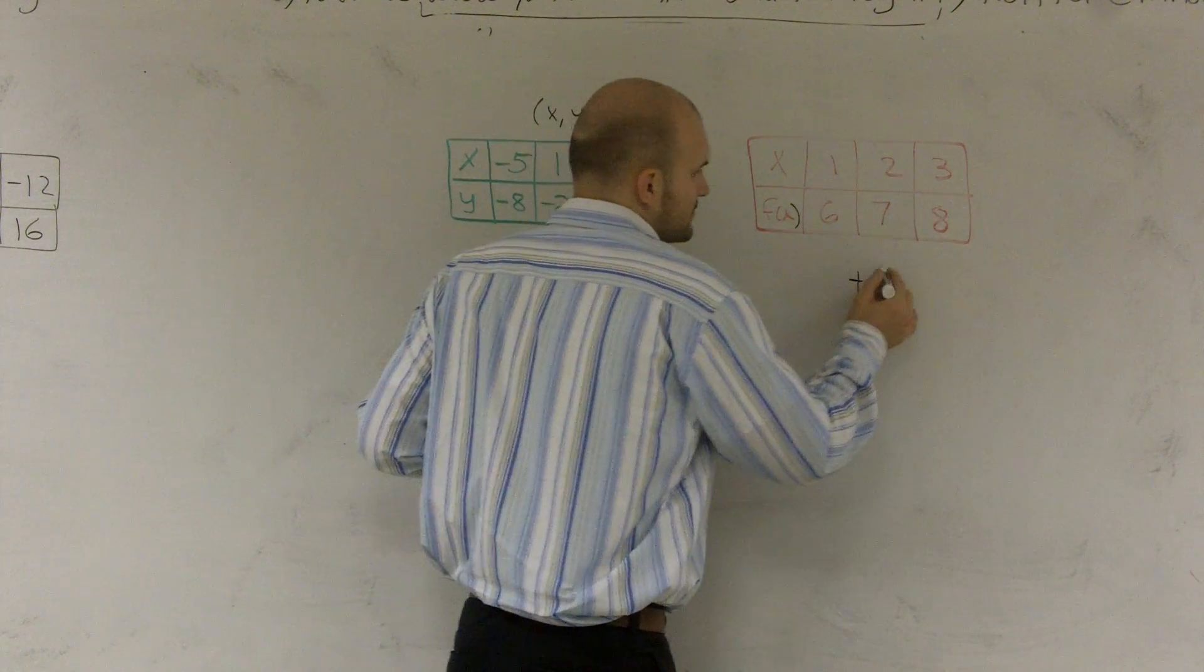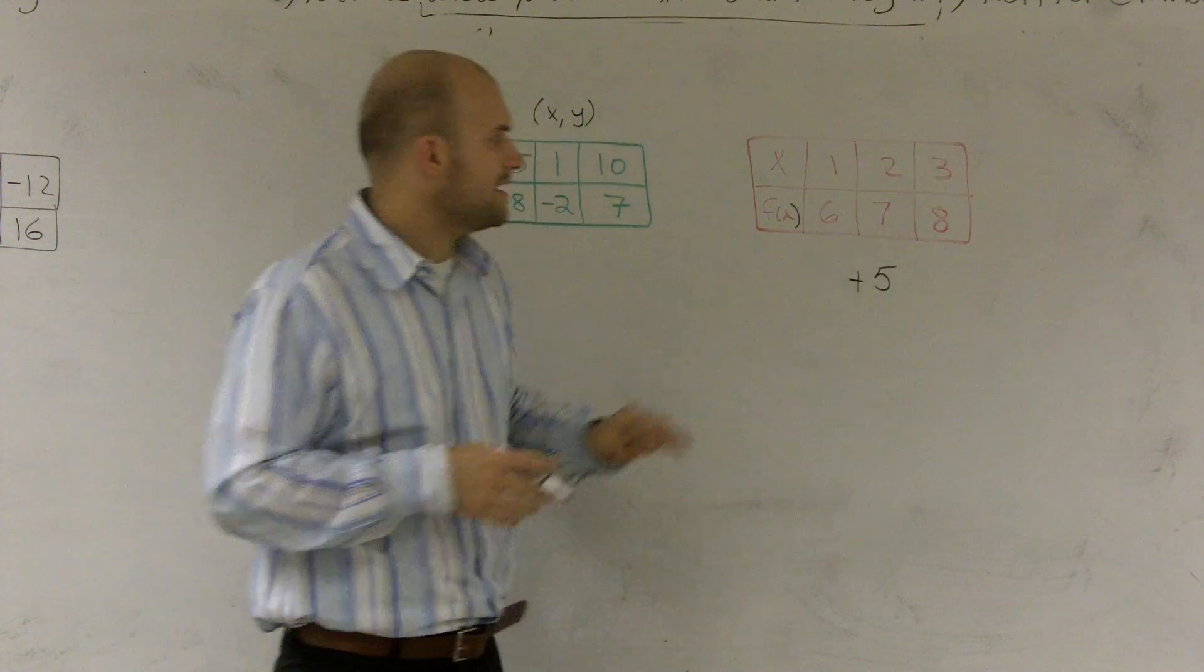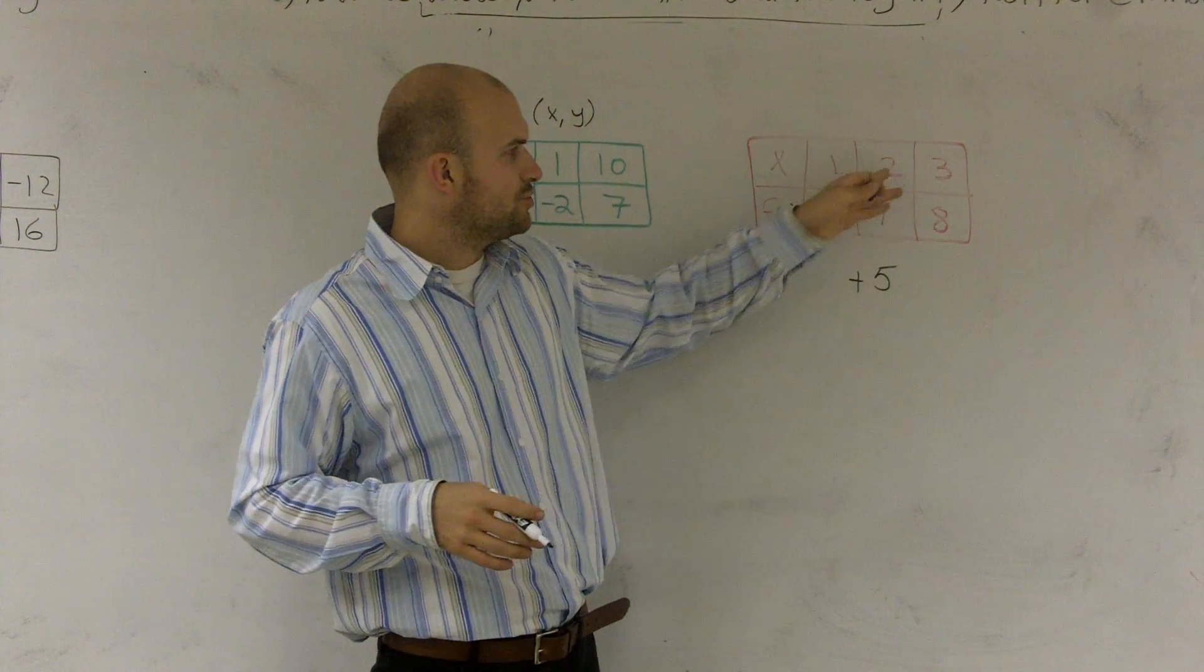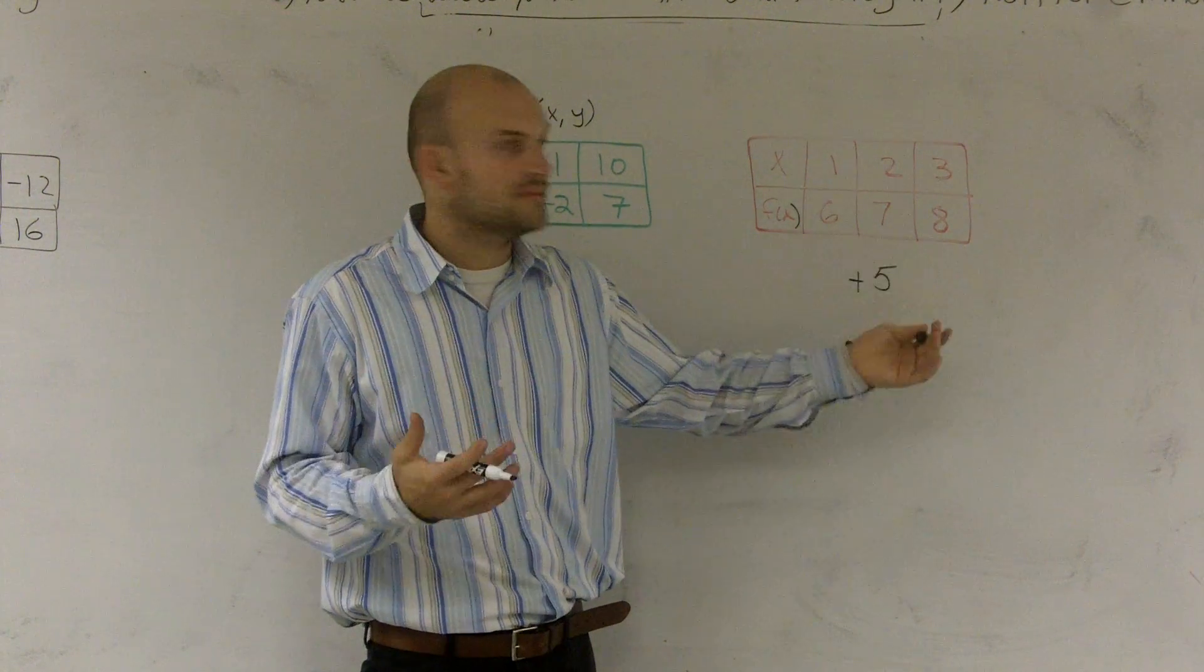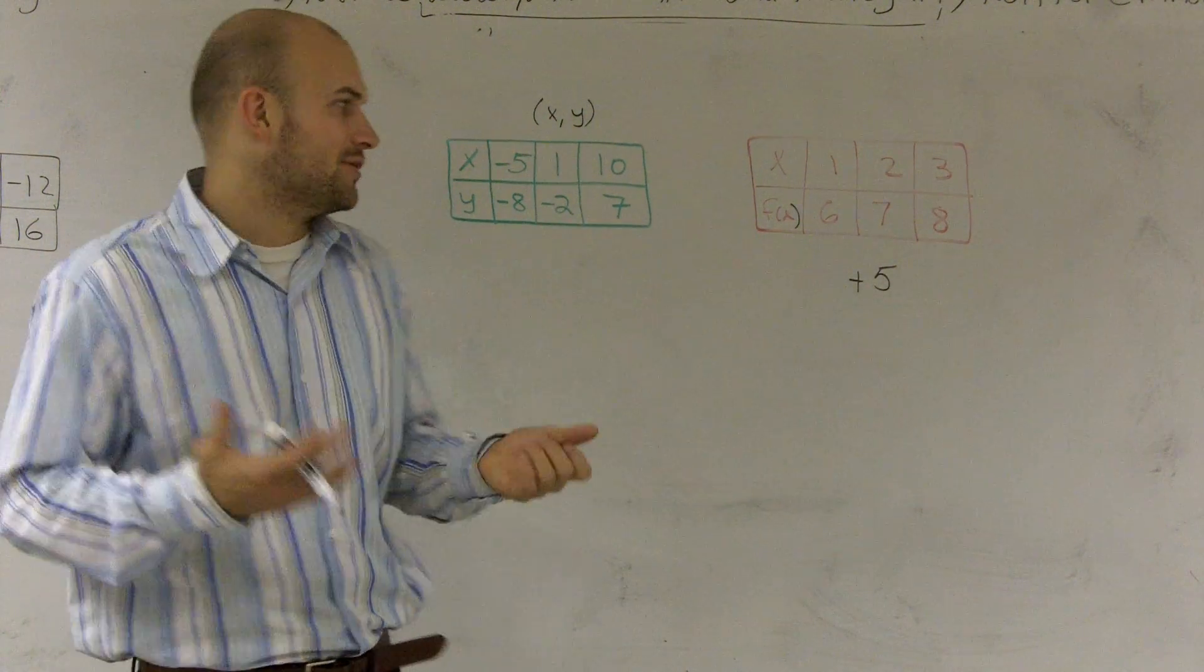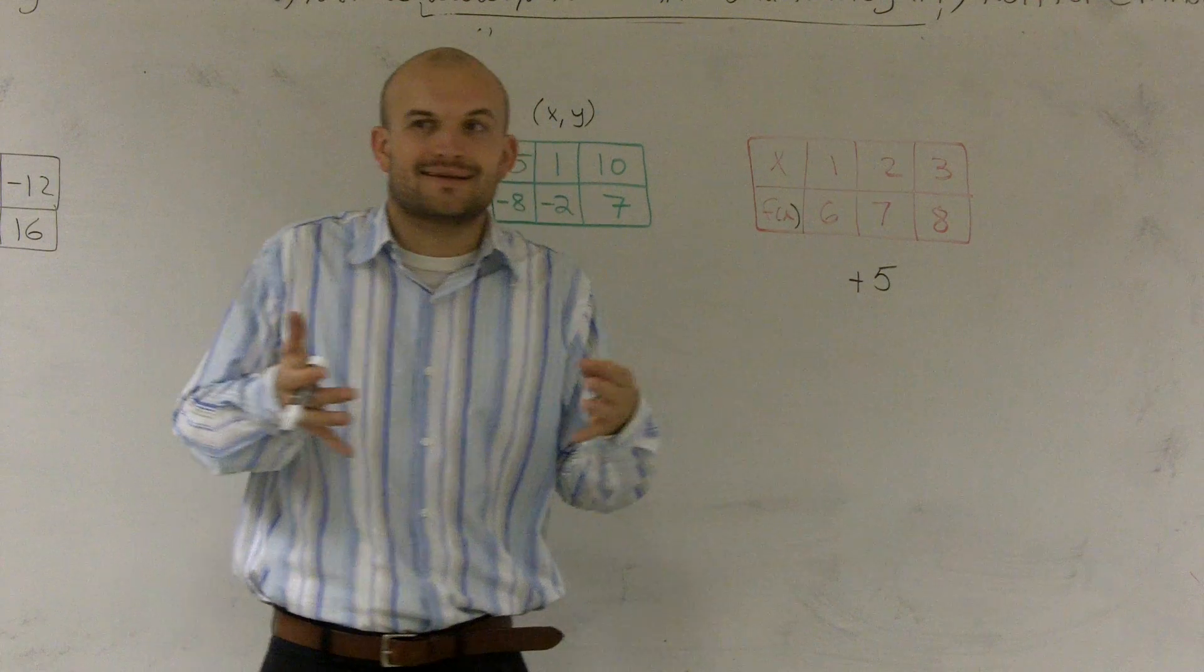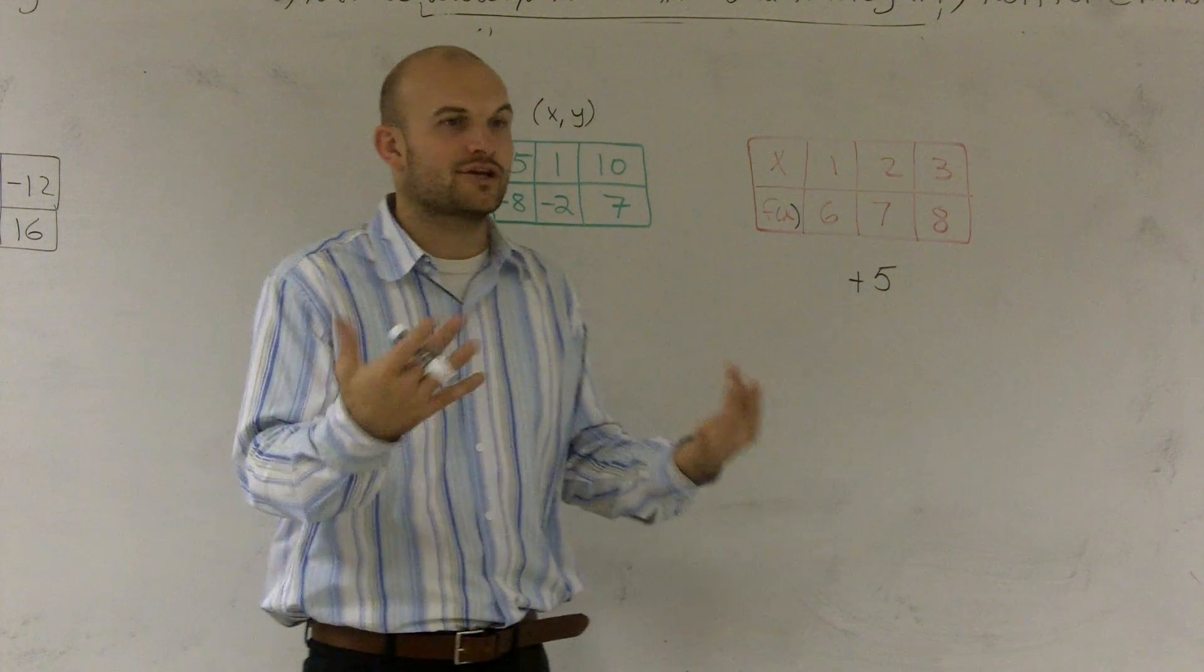You can say, well, you're adding 5, right? Does that work for the rest of them? Does 2 plus 5 give you 7? Yes. Does 3 plus 5 give you 8? Yes, it does. So I noticed that my rule is going to be plus 5. But that's not your rule. You need to write it as an equation.